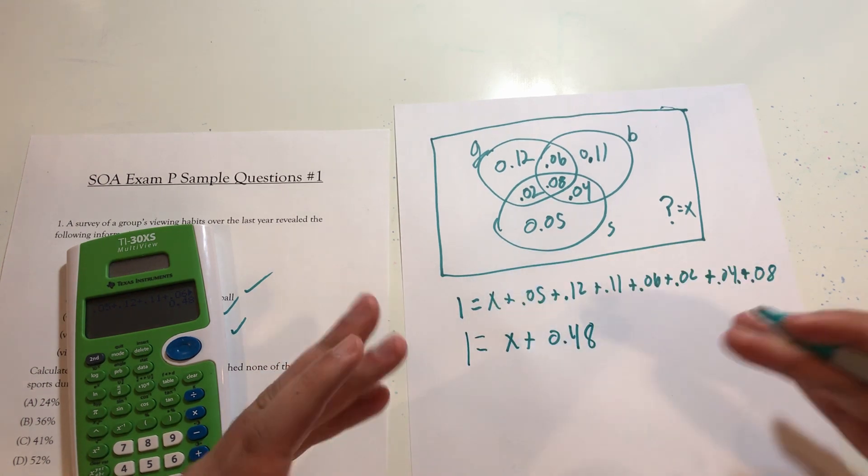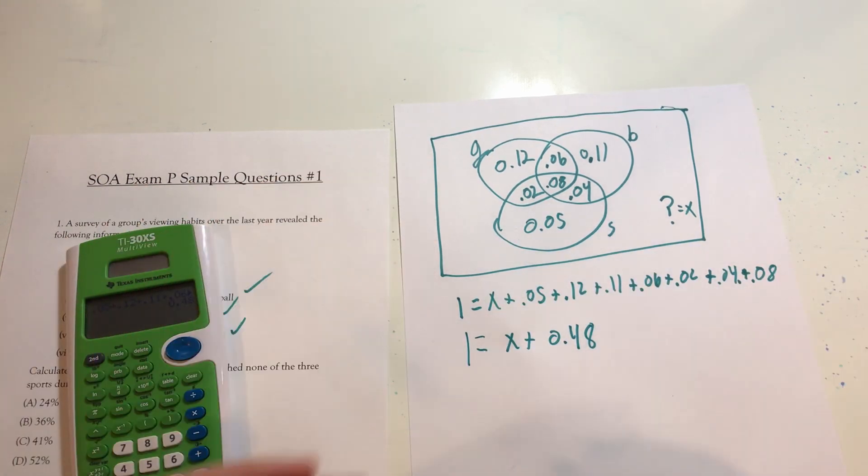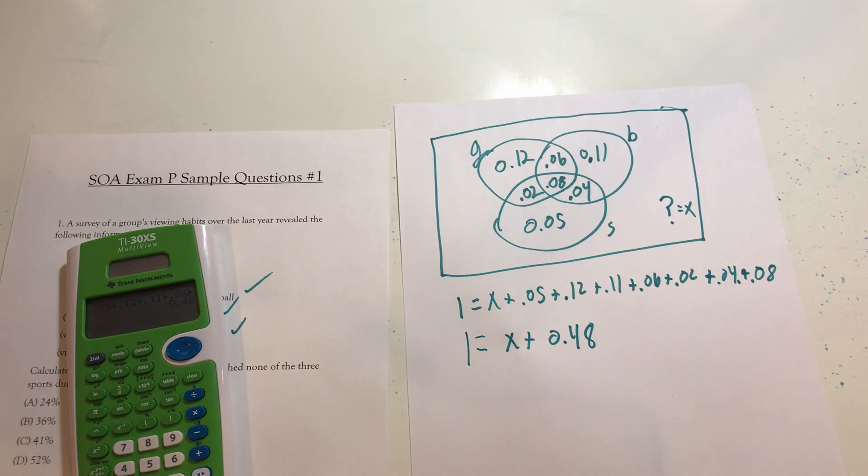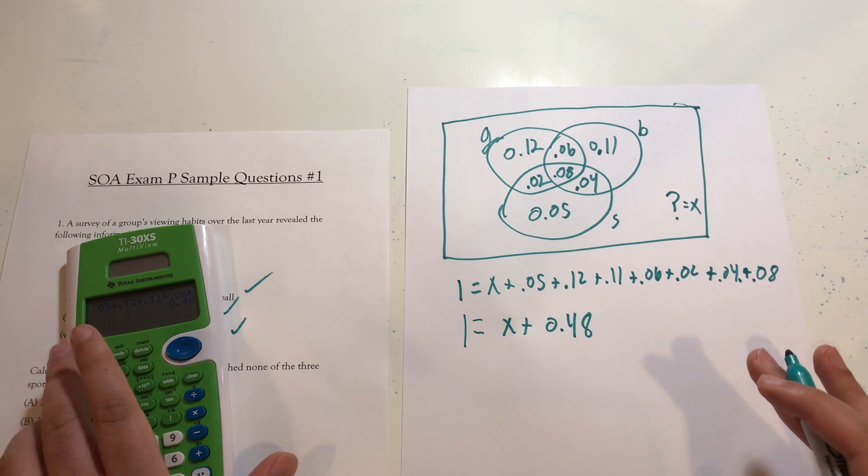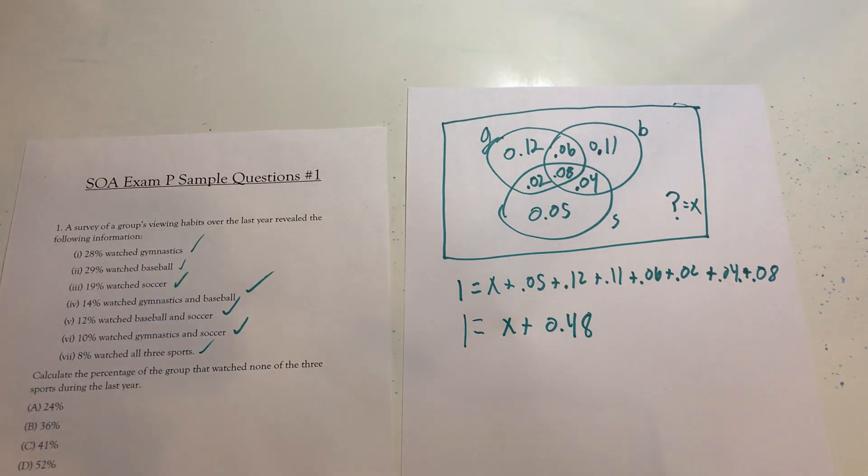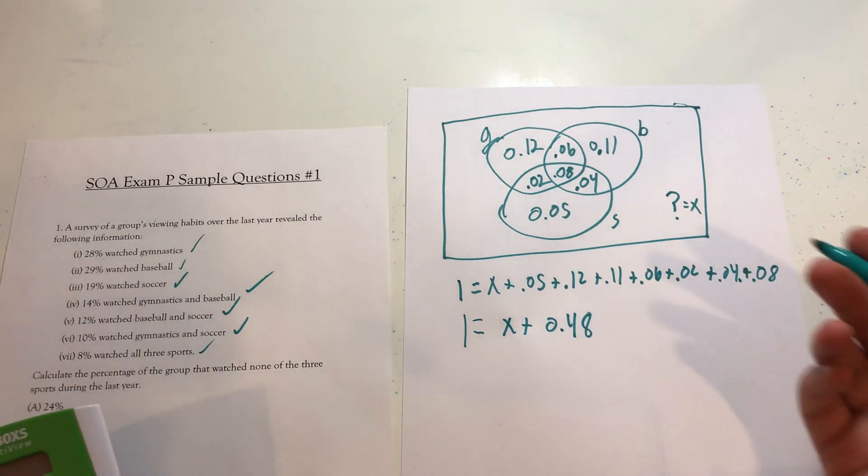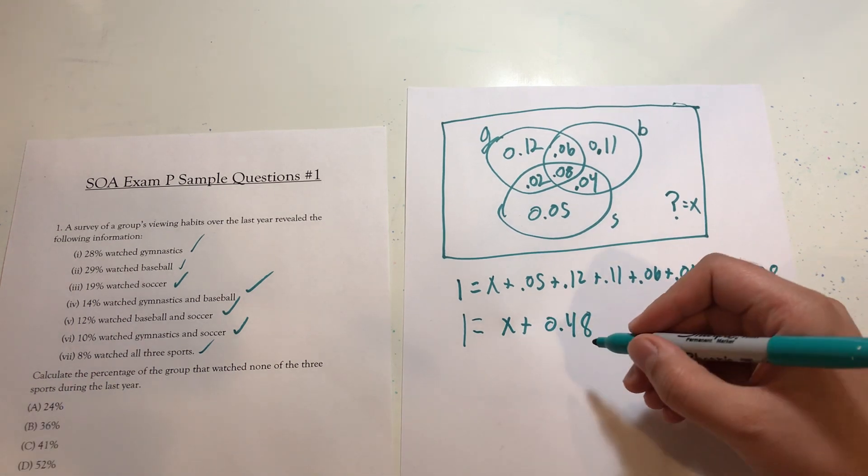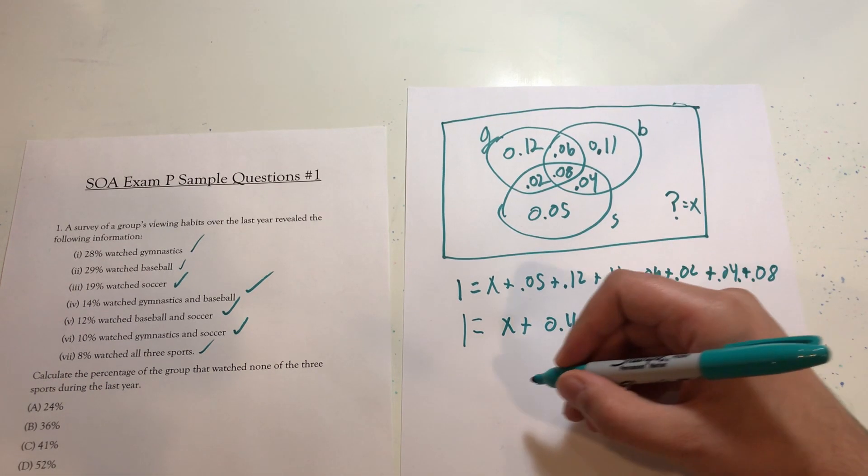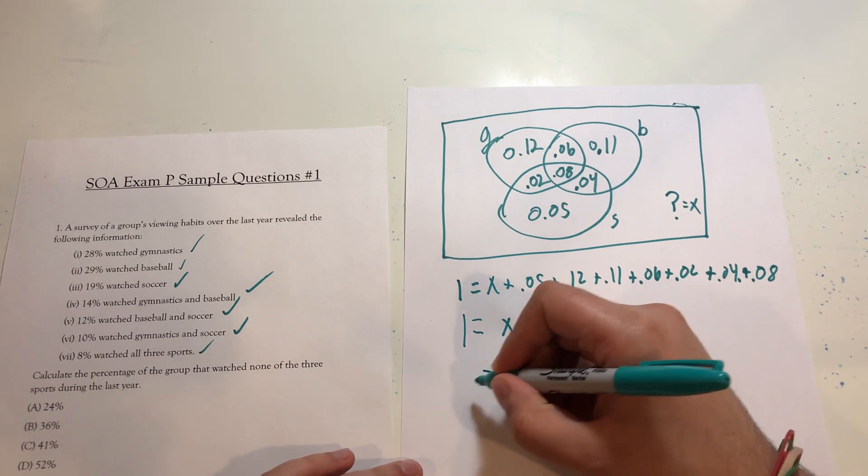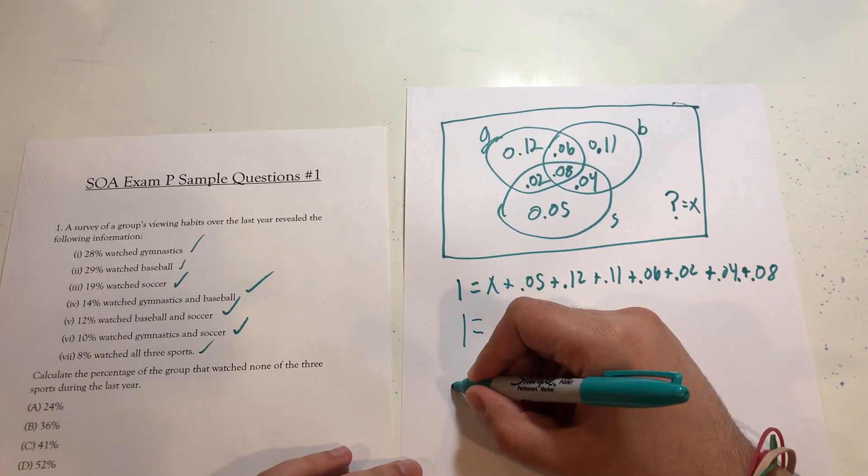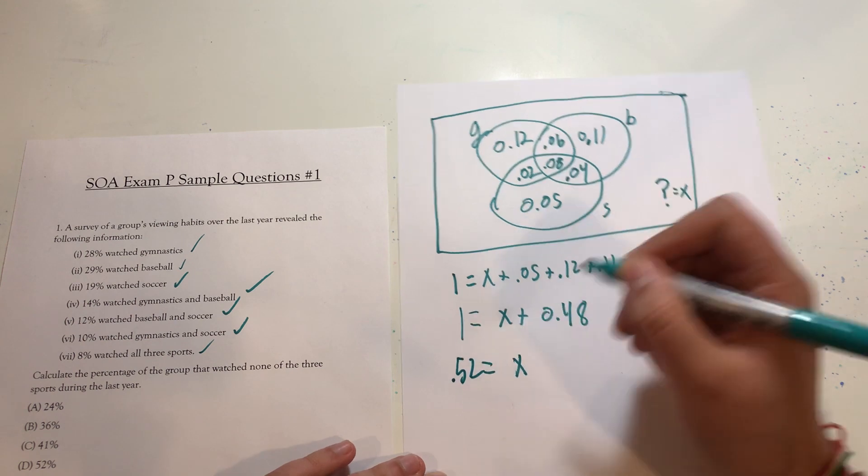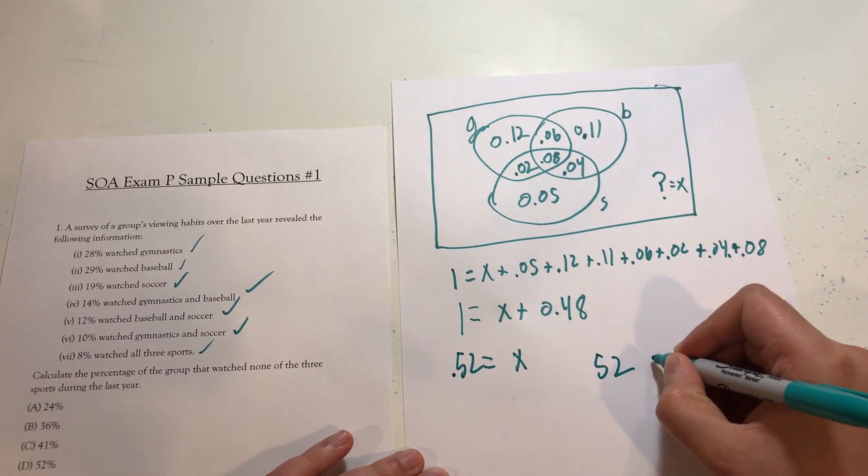The reason I don't already have this solved out is because I want you to see me actually work through the problem rather than just explain it, having really looked at it before. Now from here, all I have to do is simple algebra. Bring it over to the other side. One minus the 0.48 should get me a value of X equals 0.52 or 52%.